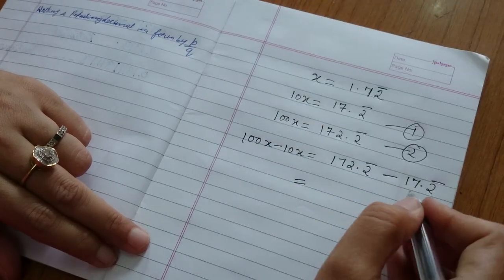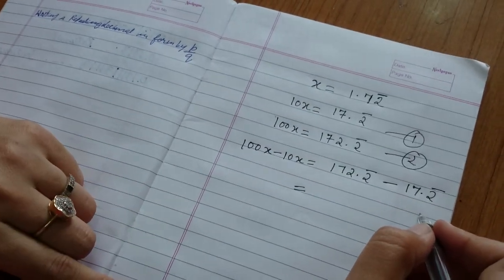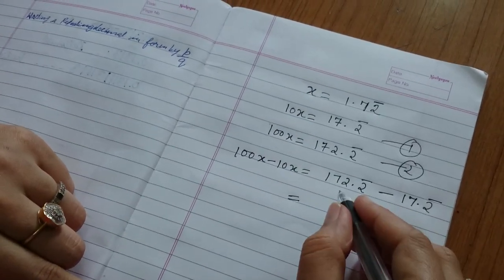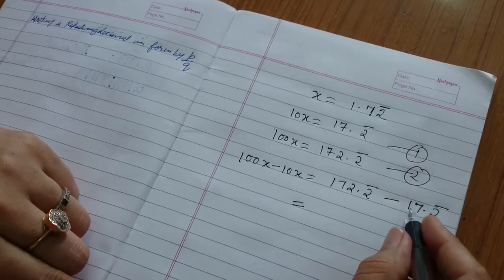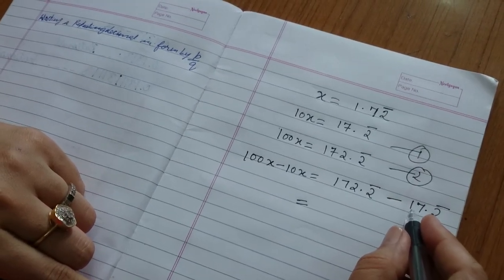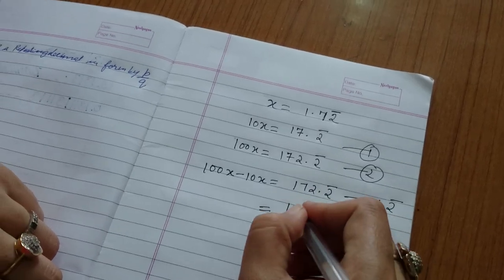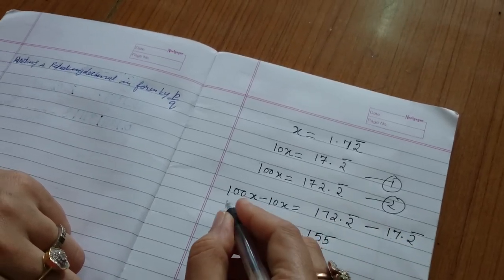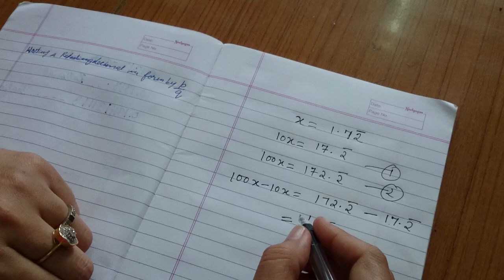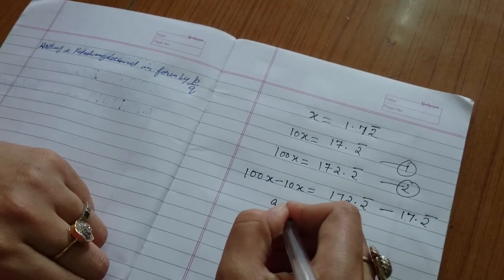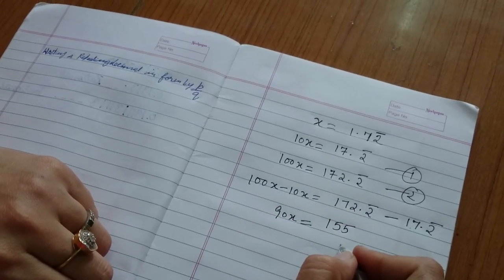So what is 172 minus 17? 90x is equal to 172 minus 17, 155. And 100x minus 10x? 90x. So 90x is equal to 155.